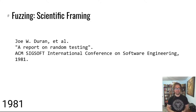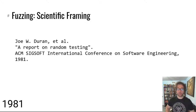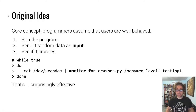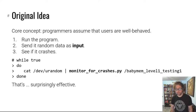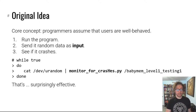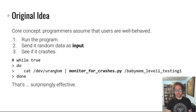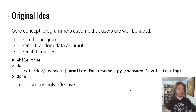Fuzzing was scientifically framed in the 1980s — rediscovered and described at a top software engineering academic conference. The original idea was pretty simple: you run the program, you send it random stuff, and you see if it crashes. The takeaway was that lots of stuff misbehaves when sent random input. What I'm showing here is a very simple fuzzer written in bash with a little Python stub. You send random data using /dev/urandom — an interface to the kernel that sends you random data — and run whatever program you want to test to see if it crashes. This is surprisingly effective.